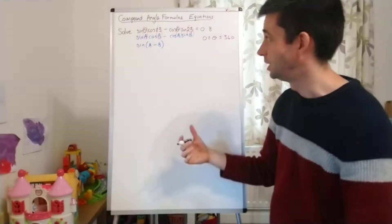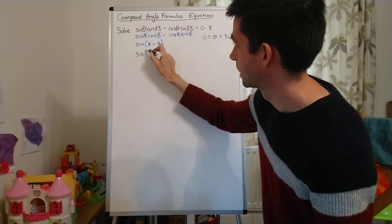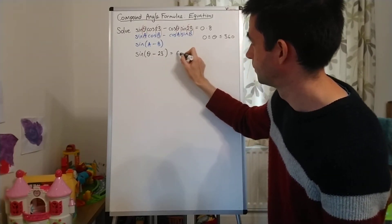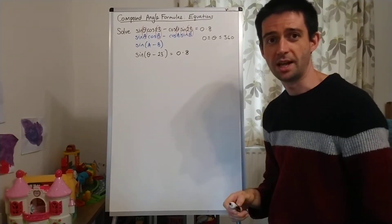And what that means that I'm able to do is to rewrite this original equation as sin, then in a bracket, theta minus 23 equals 0.8.